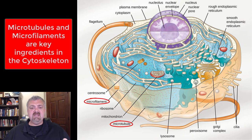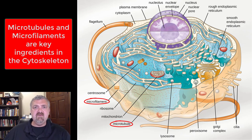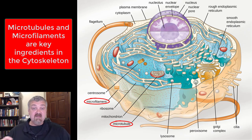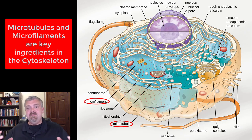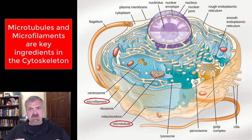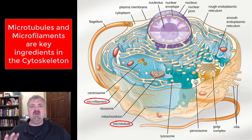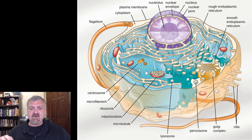Next, microtubules and microfilaments — these both make up your cytoskeleton, the skeleton of the cell. The key difference is that a microfilament is a solid structure while a microtubule is hollow. They give the cell shape and structure, but also help with the movement of materials, since things can be carried along their surface.